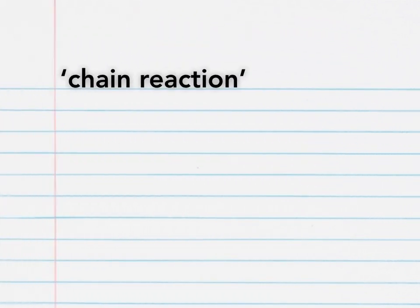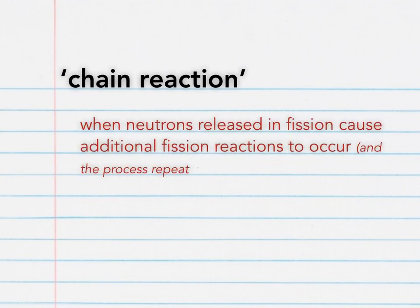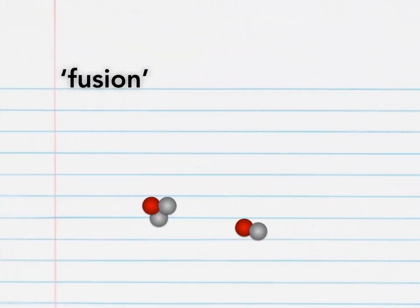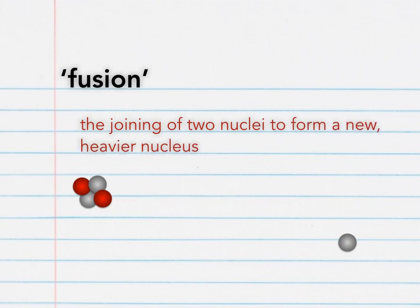A chain reaction is when neutrons released in fission cause additional fission reactions to occur, and so on. Last up, we have fusion. A fusion reaction is the joining of two nuclei to form a new, heavier nucleus.